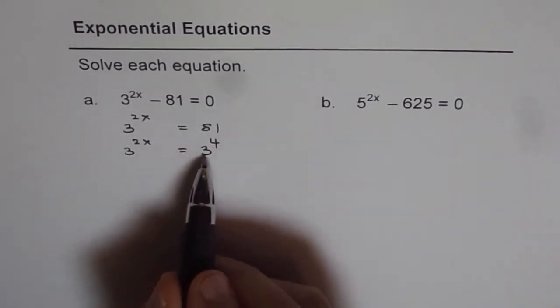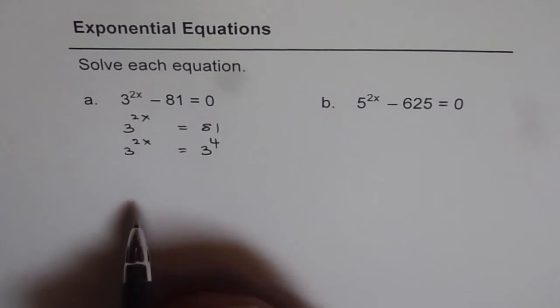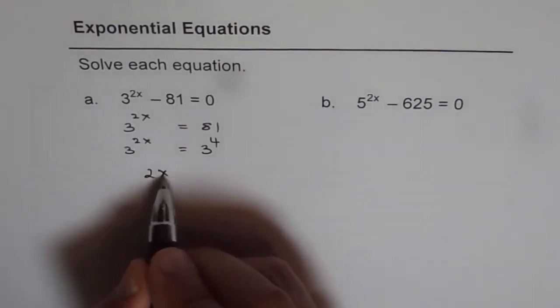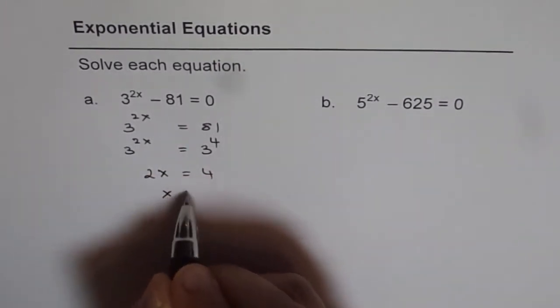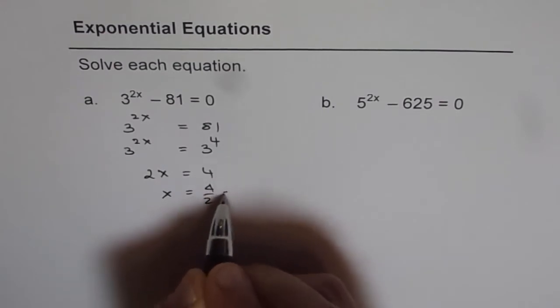Since we have the same base, we can equate exponents. So we get 2x equals to 4, or x equals 4 over 2, which is 2.